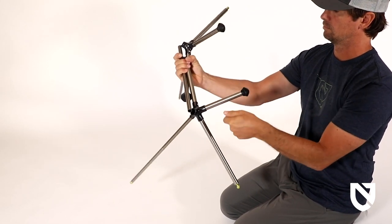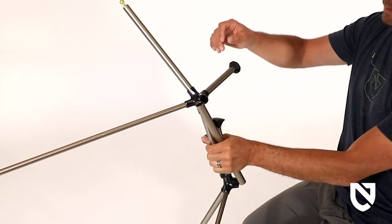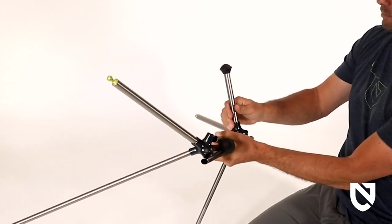Holding the collapsed poles in one hand, continue to disconnect the assembly by pulling the remaining poles out of the hub with the other hand.